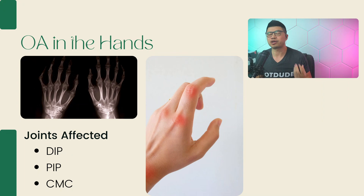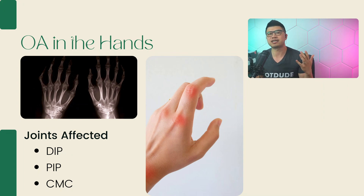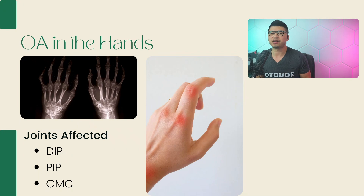OA is prevalent in the lower extremities, but also in the hands, affecting the DIP, PIP, and CMC joints. Thinking critically, this can result in associated functional impairment due to substantial pain, joint instability, deformity, and loss of motion.